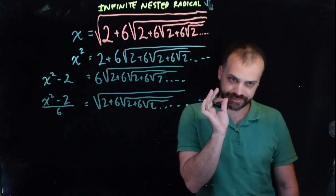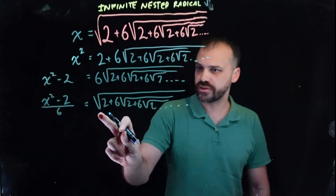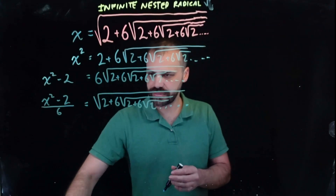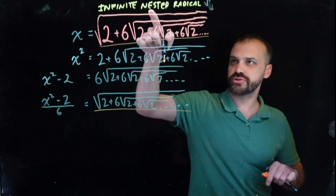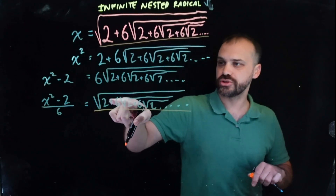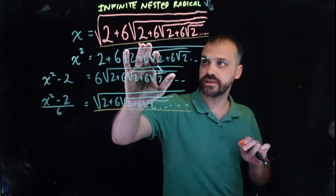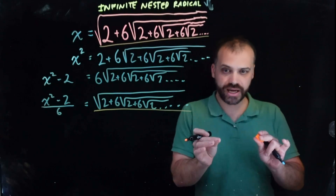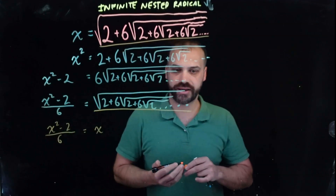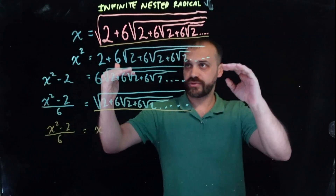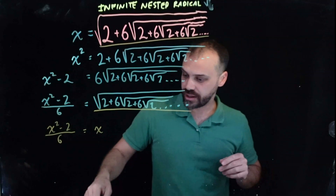This is the magical bit — this is the bit I love. x squared minus 2 over 6 equals this expression. But look: this expression right here is equal to the original statement. The square root of 2 plus 6 times the square root of 2 plus 6 times the square root of 2 — these are the same. The pink thing up here and this blue thing here are the same, and the pink thing is equal to x. So something magic happens: x squared minus 2 over 6 is equal to x. Holy moly! Just like that, we've gone from this infinite thing to this simple little expression.